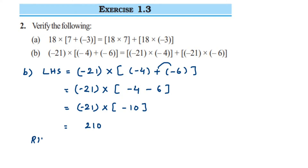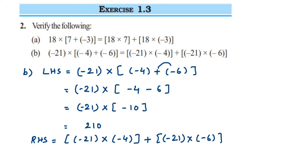Now for the RHS: minus 21 multiplied by minus 4, plus minus 21 multiplied by minus 6. 21 into 4 is 84, and minus into minus is plus, so we get plus 84. Then 21 into 6 is 126, and again minus into minus is plus. So we add 84 and 126, which equals 210. LHS and RHS are both 210, so this is verified.